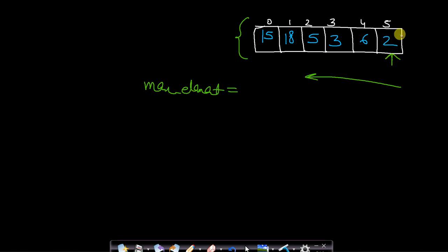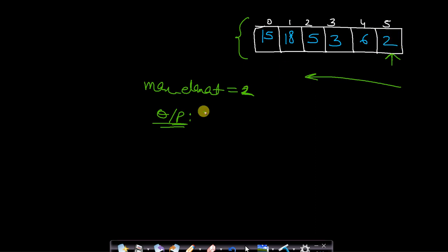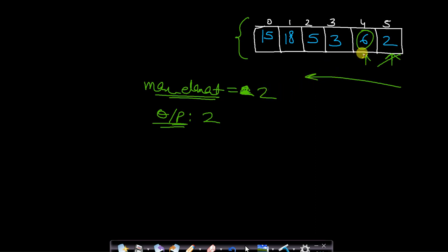We will come to the rightmost element first, and max_element will be equal to the rightmost element which is 2. We will add it to the output because the rightmost element is always a leader, and we assign max_element to 2. Now we move to its left and compare the current element 6 with the max element seen so far. If the current element is greater than the max element seen so far, then there will be no element to the right of the current element which is greater, because we are already traversing from right to left.